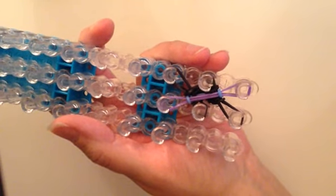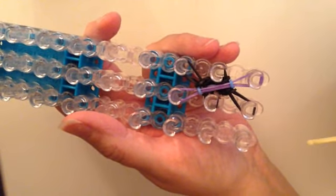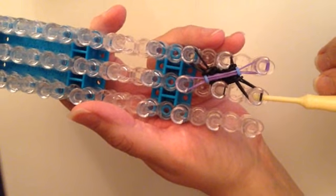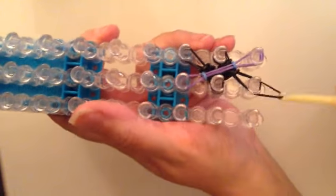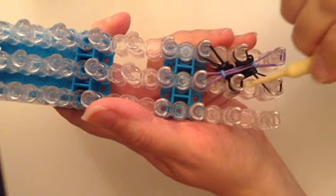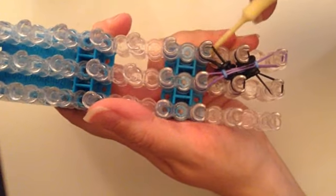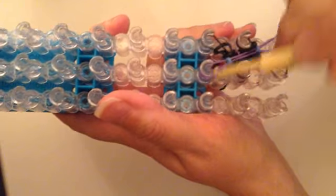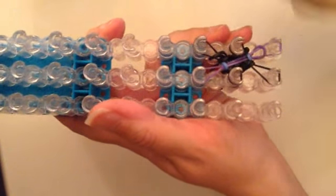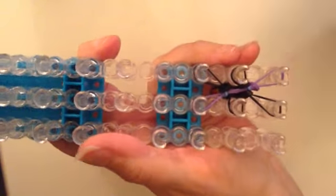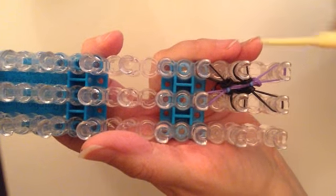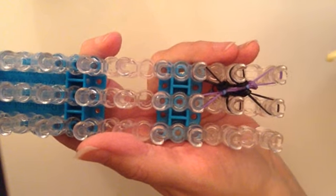Now when your bracelet is to the length that you'd like it, you want to take the next layer off in the same pattern. So you start with this one, and then you do the one above it, and then you do the long piece. Pull it down. Now you should only have one rubber band on each peg.